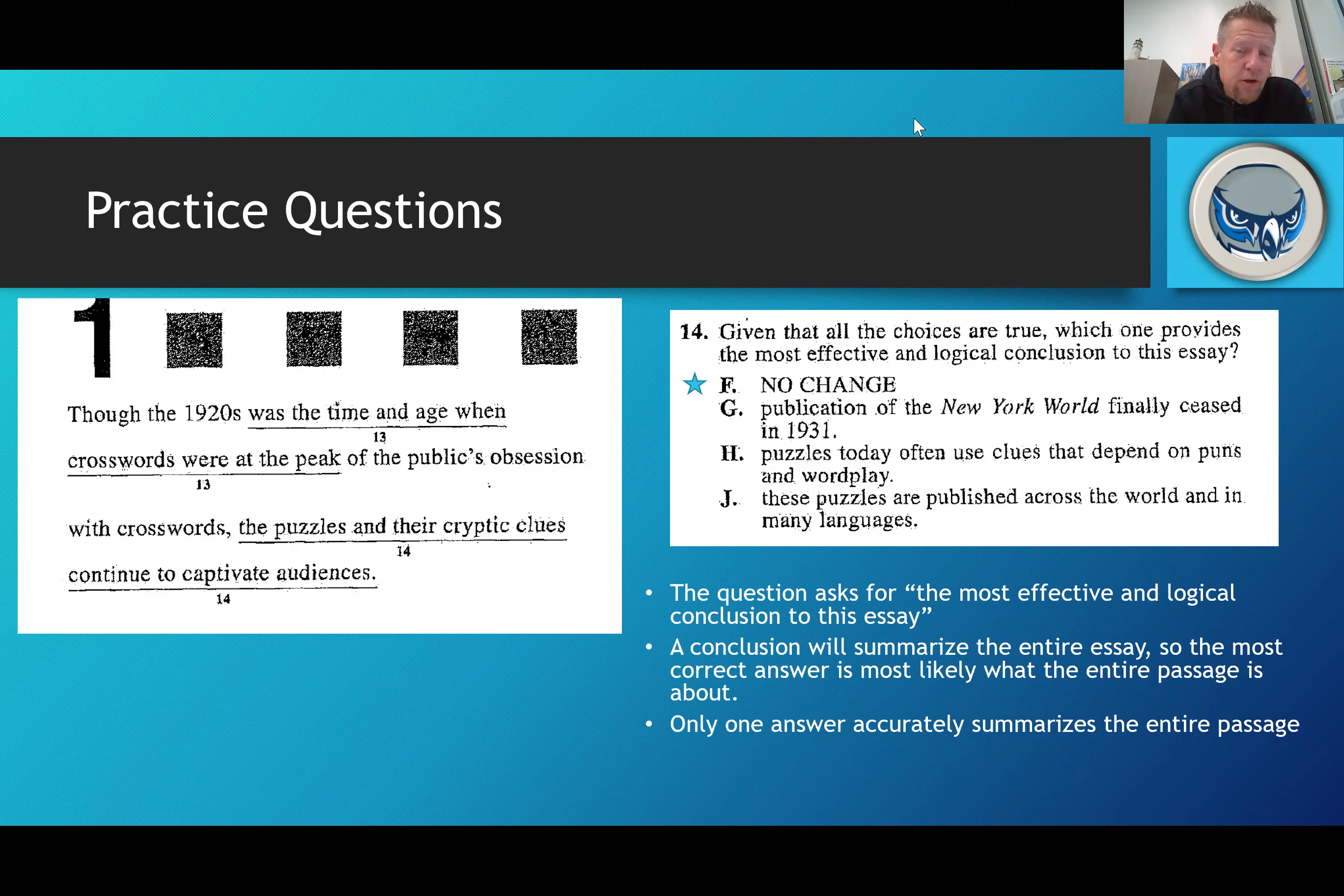If you look at some of the answer choices G, H, and J, you'll see that they're much more specific and probably don't capture the entire passage. Publication of the New York World finally ceased in 1931 says answer G. I don't think this passage is about publication of the New York World.